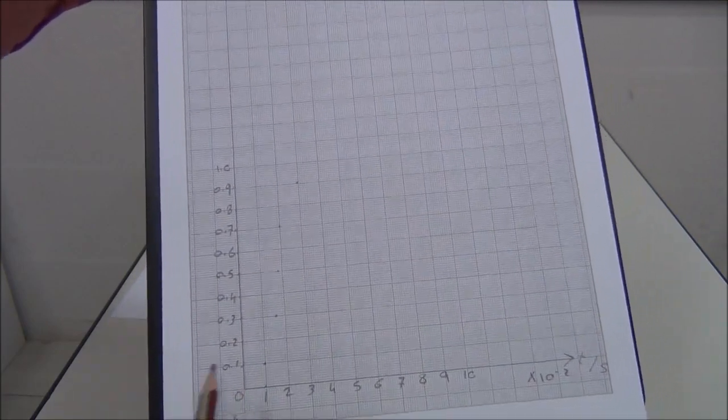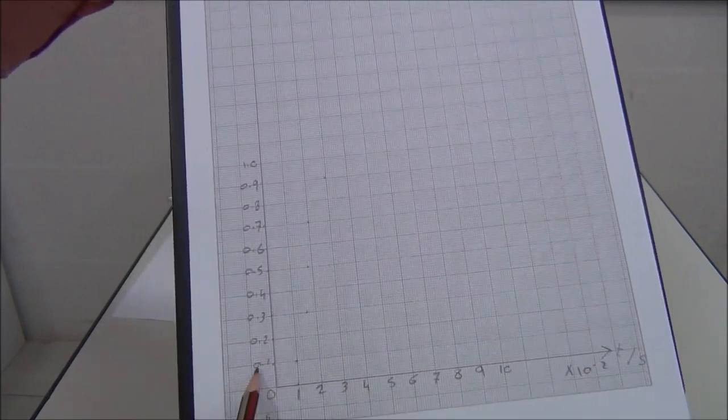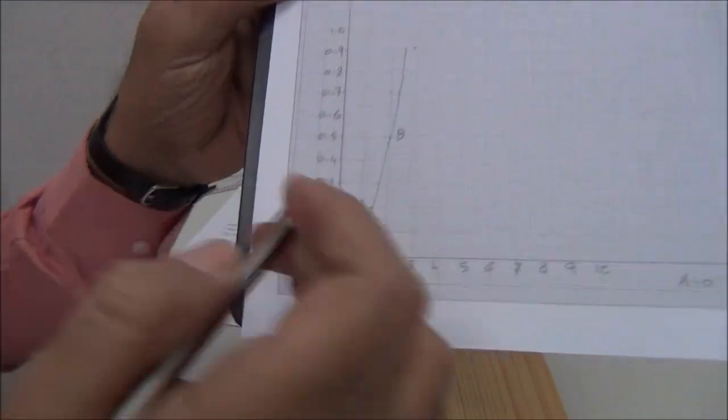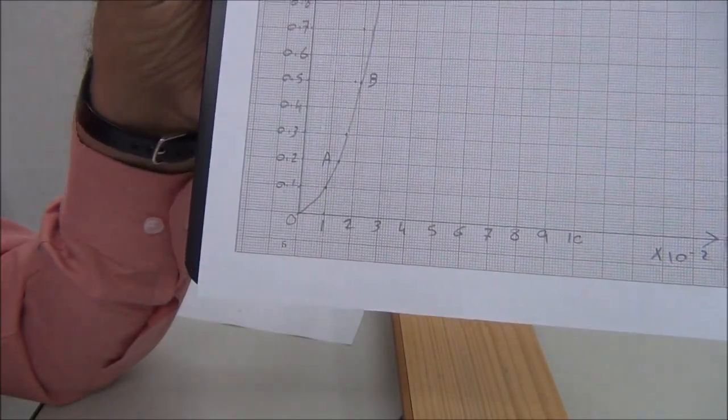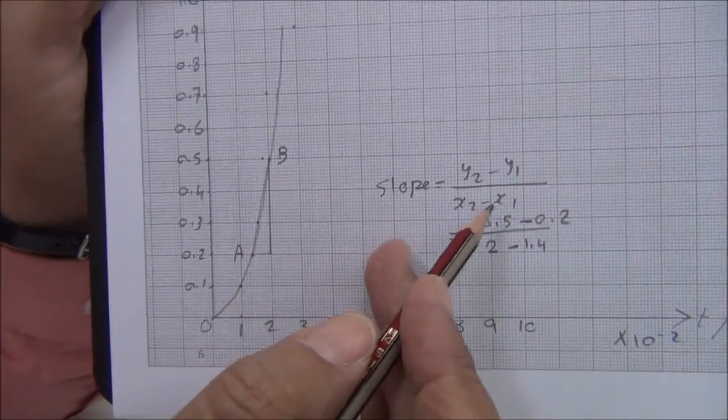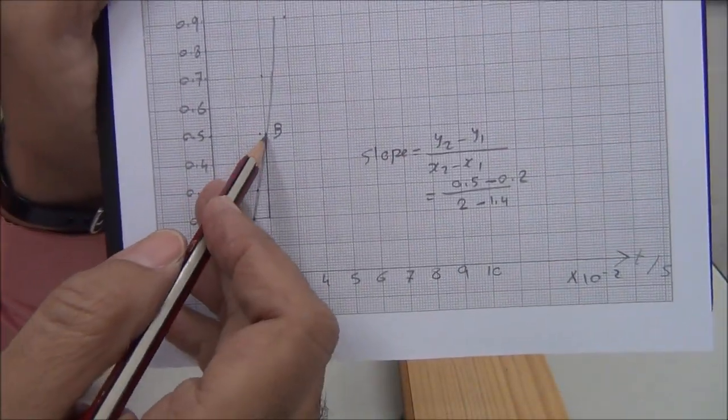Because when the time is zero, the displacement is zero. We take two points, join between those two points, and find the slope. The slope of that line forms a triangle.